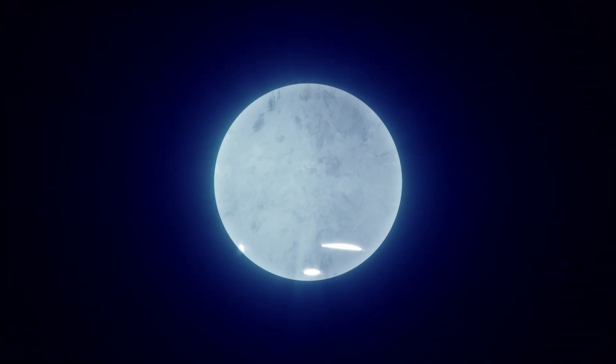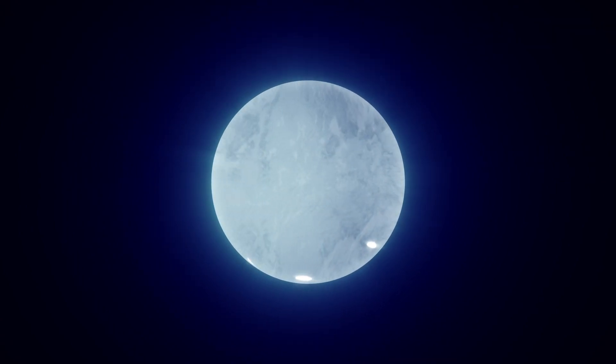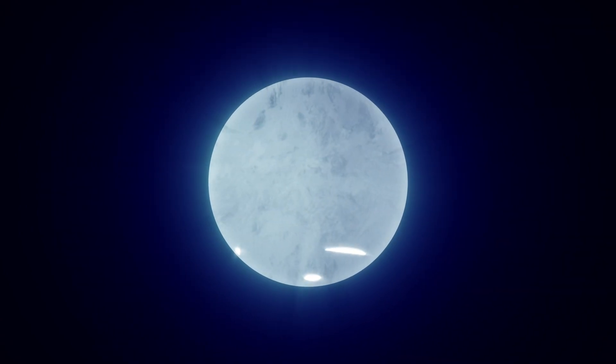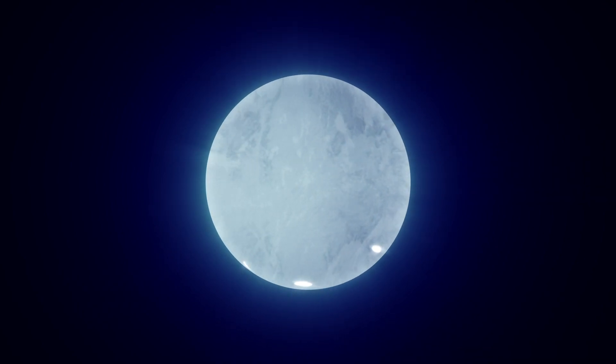This is J0030, a type of dead star called a pulsar, located about 1,100 light-years away in the constellation Pisces.